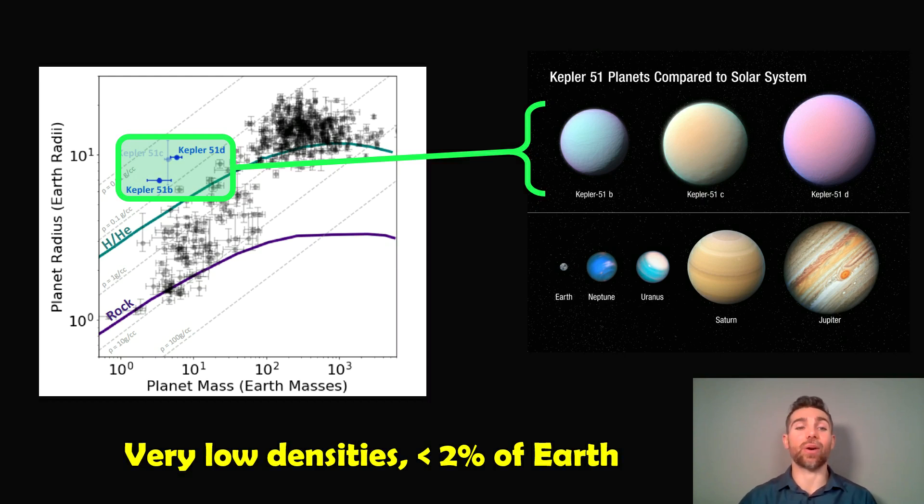So this is a system of Super Puff planets, which is Kepler 51 B, C and D. There's their size comparison to Earth, Neptune, Uranus, Saturn and Jupiter. And you can see they're pretty much gas giant size, really. But their masses are quite low.